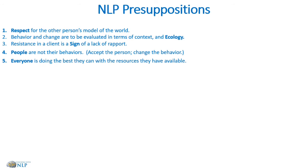The next presupposition: everybody is doing the best they can with the resources they have available. Every behavior is geared for adaptation and the present behavior is the best choice available. Every behavior is motivated behind a positive intent — even when it's not positive for others, the person doing it has an intention to achieve something. This is also the NLP equivalent of forgiveness, because we're only doing the best we can with the resources available.